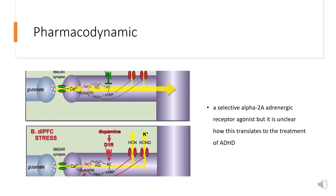Guanfacine is a selective alpha-2A adrenergic receptor agonist, but it is unclear how this translates to the treatment of ADHD. It has a long duration of action as it is given once daily, and a wide therapeutic window, as fatal overdoses have not been described in literature. Patients should be counseled regarding the risk of hypotension, bradycardia, and syncope.